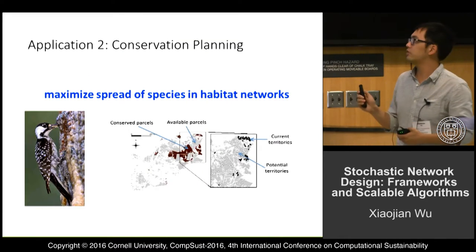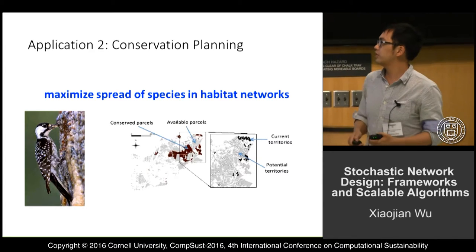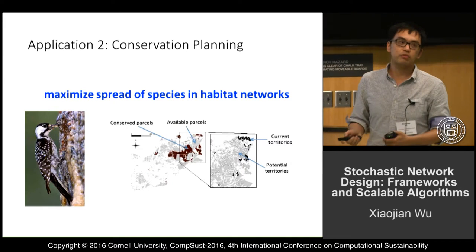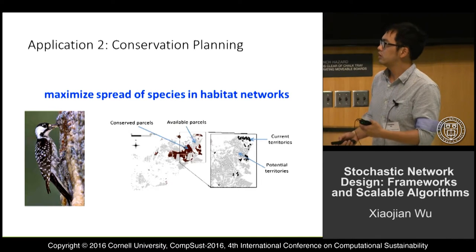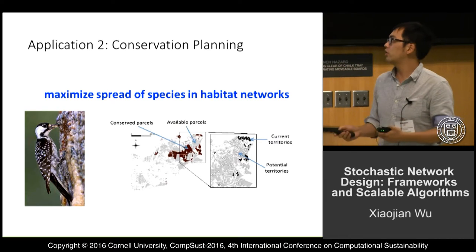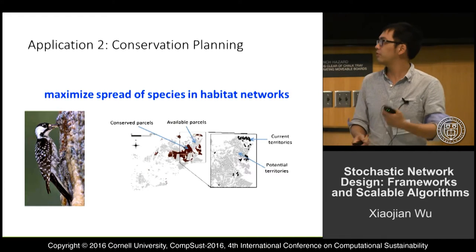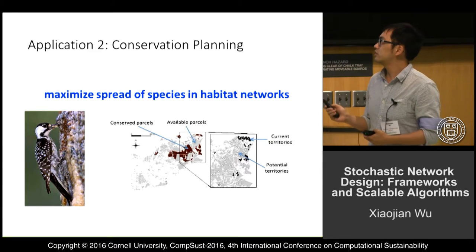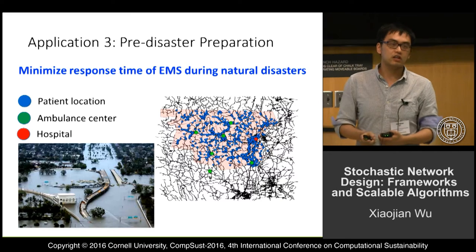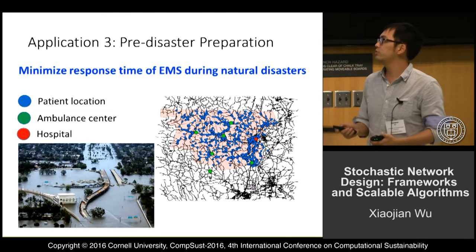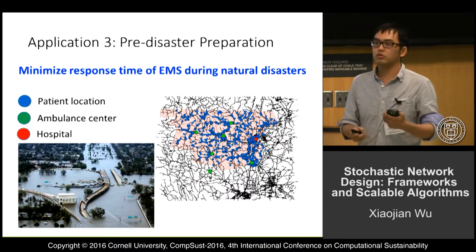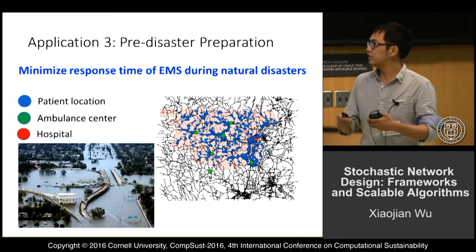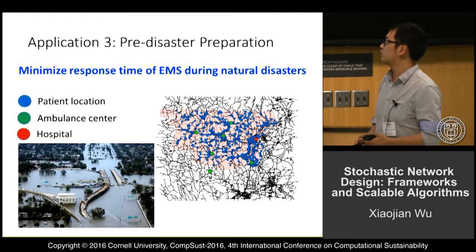Now I want to briefly discuss the other two applications. The second application is conservation planning: we have a directed graph and want to decide which land units to purchase, with the goal of maximizing the spread of a species in the habitat network. The third application is pre-disaster network preparation, where the goal is to minimize the response time of emergency medical services during natural disasters by selecting road segments to fix and improve network resilience.